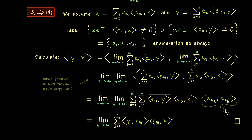So altogether, with that proof, you now know that all four statements are equivalent and are known as Parseval's identity. Having an ONB is needed if you want to use all these nice calculation rules. I will show you what we can actually do with that in some future videos. Hope to see you there — have a nice day, bye bye!